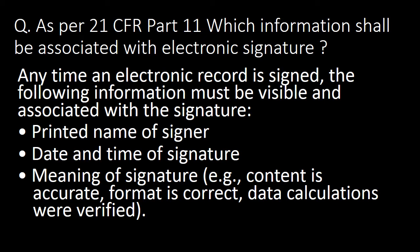As per 21 CFR Part 11, which information shall be associated with an electronic signature? Any time an electronic record is signed, the following information must be visible and associated with the signature: first, the printed name of the signer; second, the date and time of signature; third, the meaning of the signature — that is, content is accurate, format is correct, and data calculations are verified.